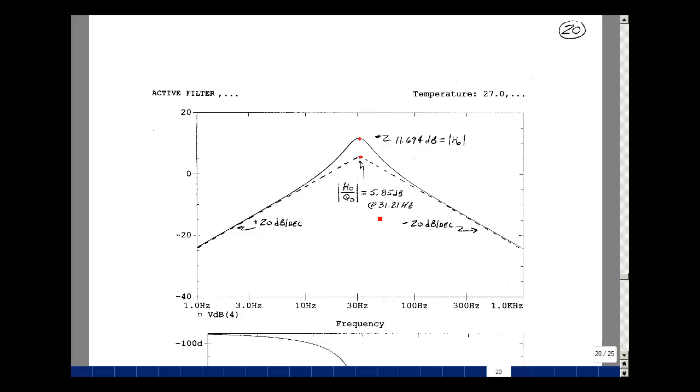And they cross at F0, which is 31.21 hertz, which I found from the peak. And the value that it crosses at is the ratio of H0 to Q0, and I calculated that from the numbers on the last page of a ratio of 3.846 to 1.961, and that was 5.85 in dB.